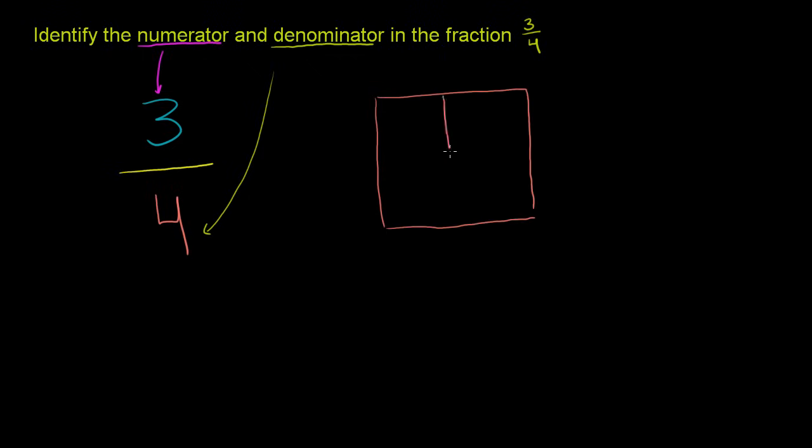So this is what the denominator represents. This is what the number on the bottom represents. And then 3 says we are representing 3 of those 4 pieces. So this 3 tells us that out of 4 possible ones, we are using 3. Or maybe we're eating 3.